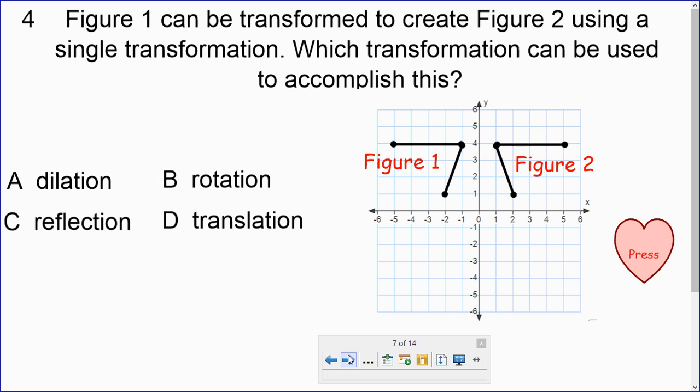If figure 1 can be transformed to create figure 2 using a single transformation, which transformation can be used to accomplish this? So we're doing this transformation one time. Dilation means figure 1 is growing. Well, in this case, it's not growing because figure 2 looks the same exact size. It has the same exact angle and the lengths are still the same. So it's not getting bigger or smaller.